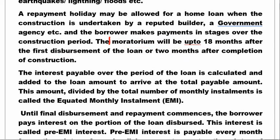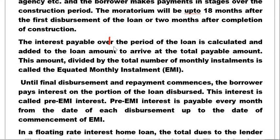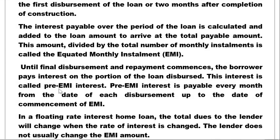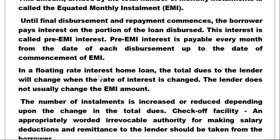During the moratorium period, interest payable over the period of the loan is calculated and added to the loan amount to arrive at the total payable amount. After that, the EMI is set up. Until final disbursement, the borrower pays interest on the portion of the loan disbursed — this interest is called pre-EMI interest, which is added to the principal.